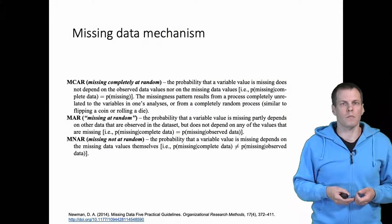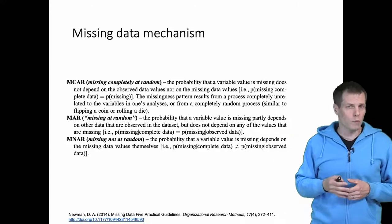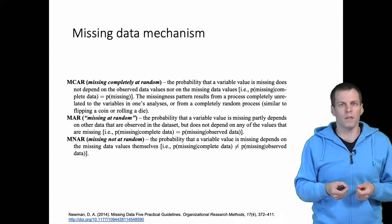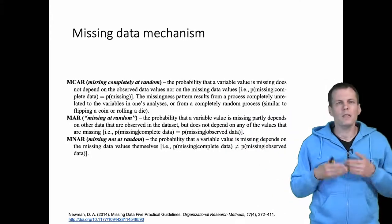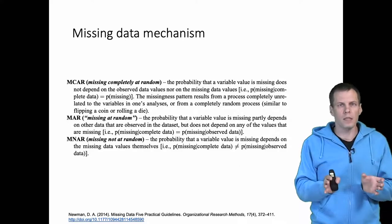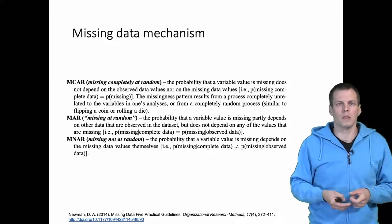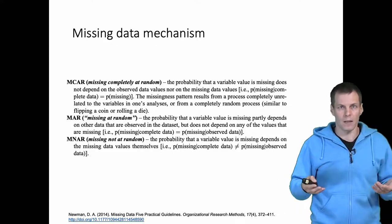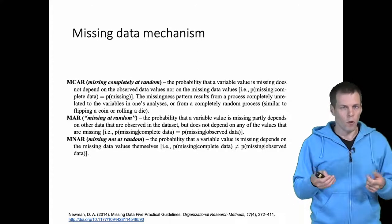There are three labels for missing data mechanism, and these are from Rubin's work. These labels are a bit unfortunate because they are not very descriptive, and you really need to think this through to understand what these mechanisms are. Missing completely at random refers to a case where the missingness does not depend on anything in the data — missingness is a purely random process — and in this case, the only consequence is that there is less data to analyze, because the missing cases are basically a random sample of the full dataset.